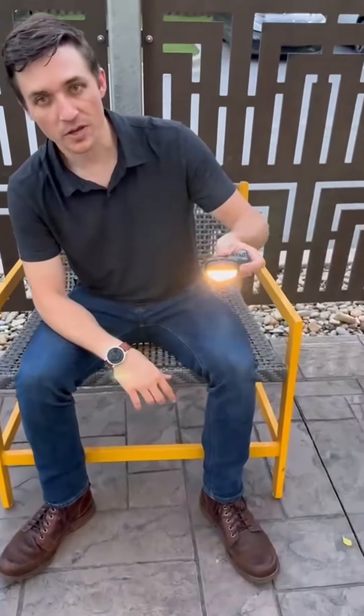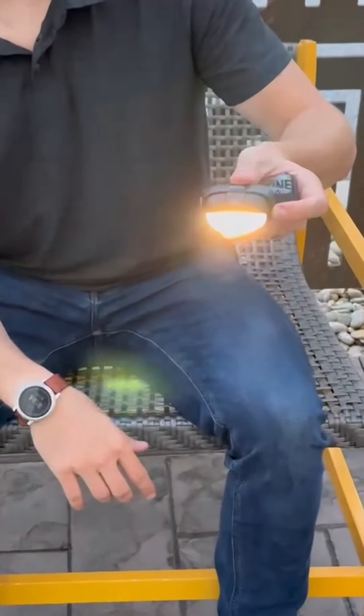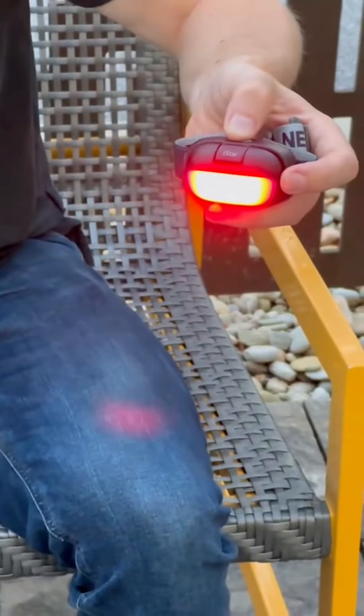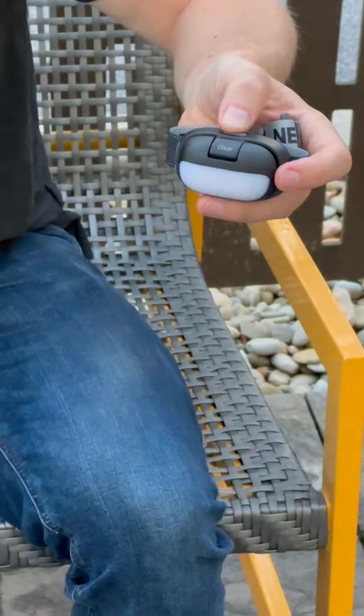And then when you are in flood mode, you get up to 105 lumens. You can also click through to go to low, go to red, and go to a red flash.